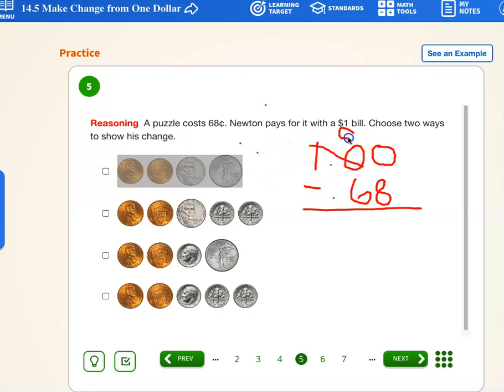Let's figure it out. This 10 becomes a nine. One comes over here. 10 take away eight is two. Nine take away six is three. So 32 cents is how much he's going to get back. So let's figure out which one here would be 32 cents.